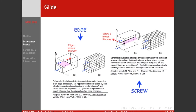For a screw dislocation, here's our right-handed screw about the x-axis. If you apply the right-hand rule with your thumb going this way, you can see this is a right-handed screw, and we apply the same shear. Our screw dislocation is going to move in a direction again perpendicular to the line, and perpendicular to the applied shear. Since the Burgers vector is parallel with the line, it's obviously also moving perpendicular to the Burgers vector.